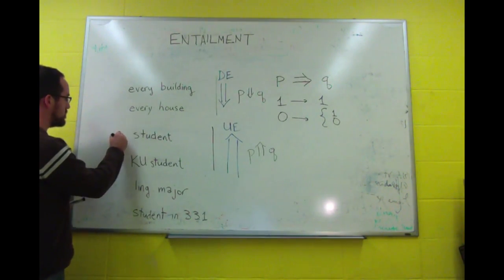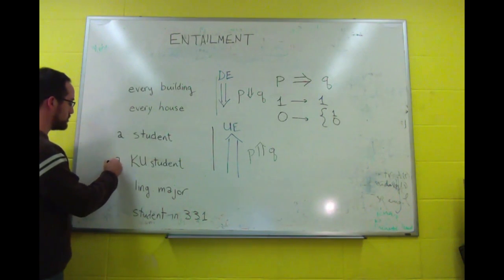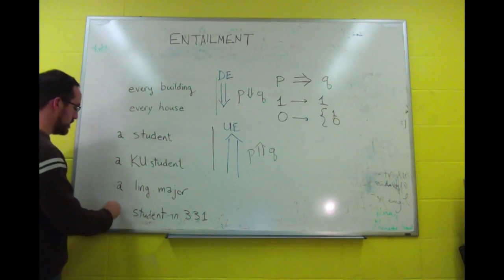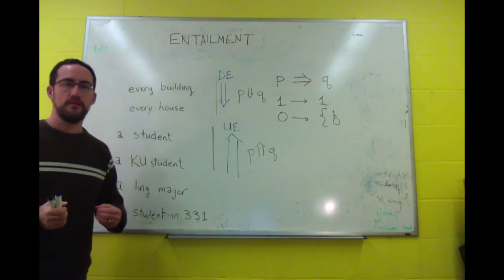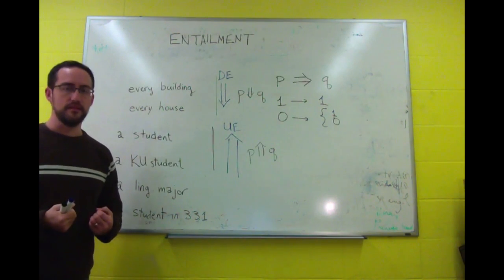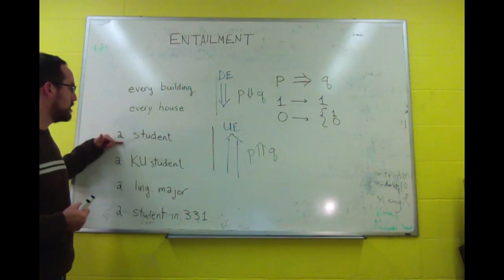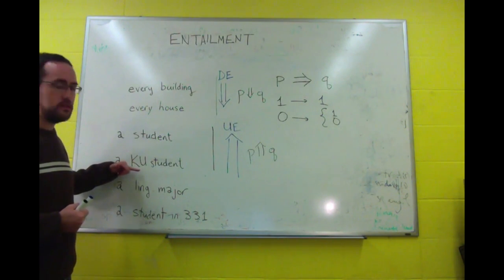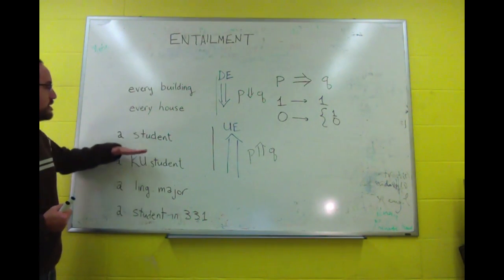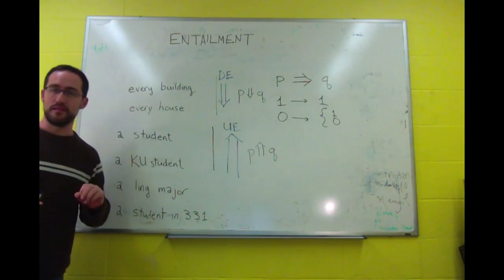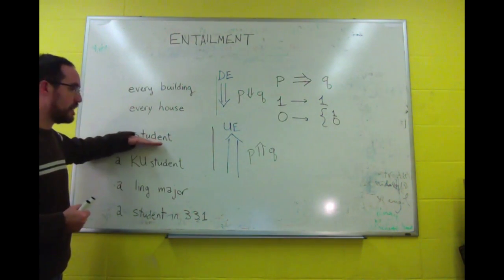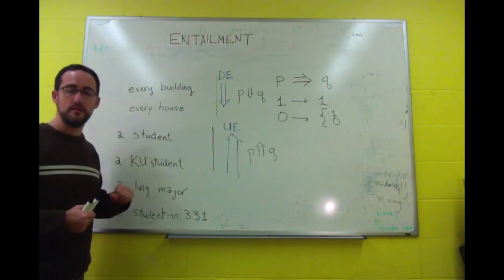And you notice, I use the phrase there is a student in my office versus every. If I say there is a student in my office, it doesn't entail that there's a KU student. If I say there's a KU student, it entails a student upward. If I say every student is in my office, well then, that entails every KU student.